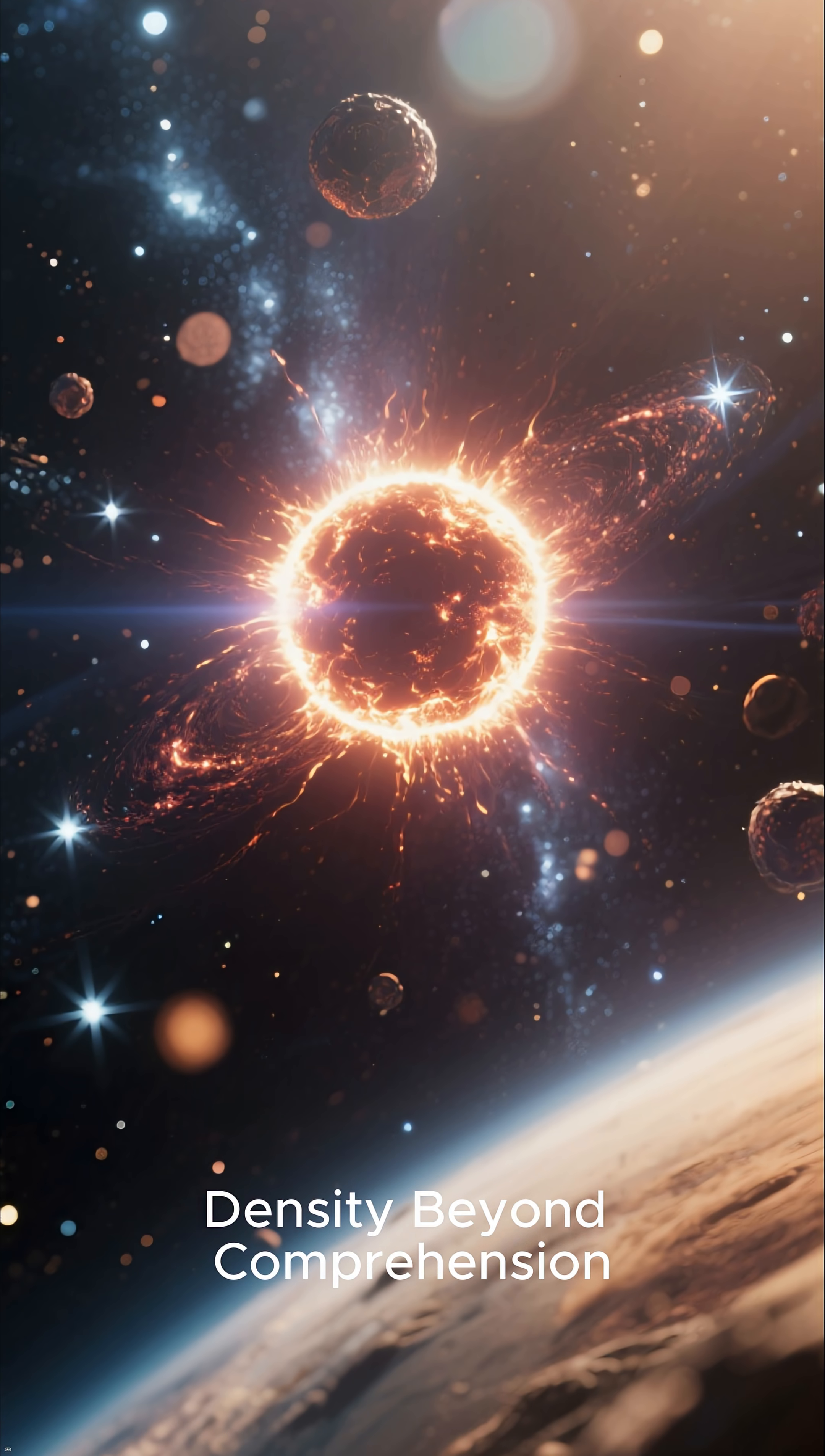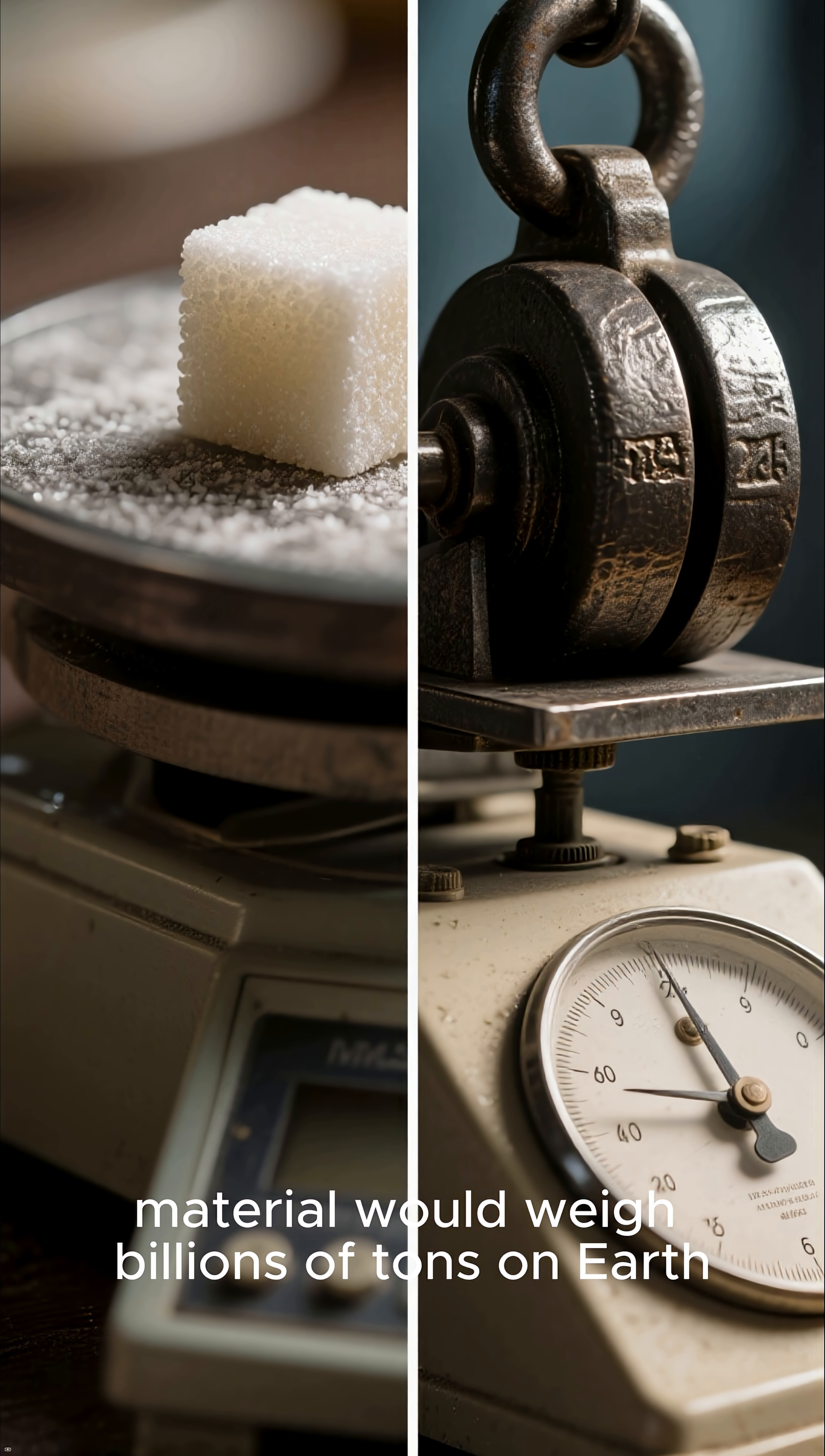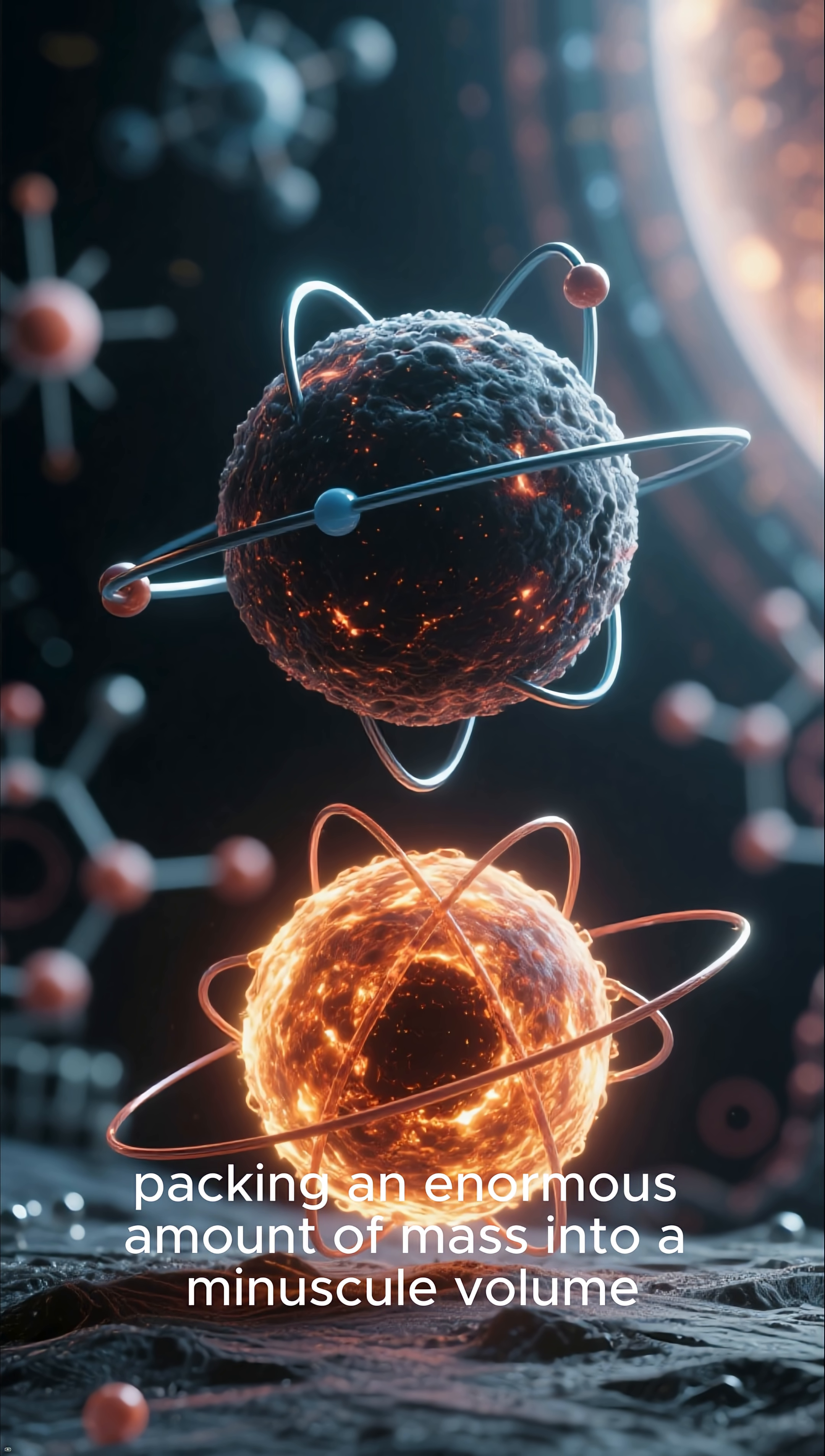Density beyond comprehension. It's time to grasp the scale of their density. A sugar cube-sized amount of neutron star material would weigh billions of tons on Earth. This density is comparable to that of an atomic nucleus, packing an enormous amount of mass into a minuscule volume.